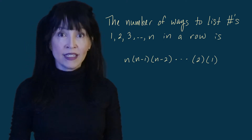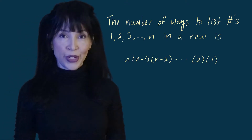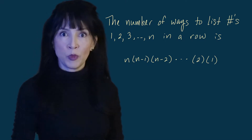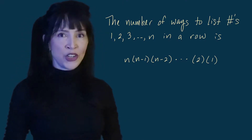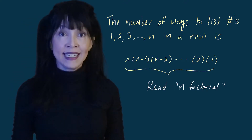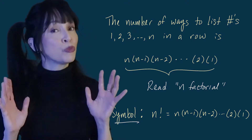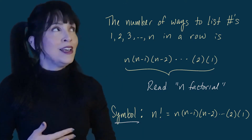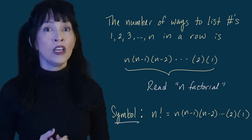If I had eight friends I don't want to draw this tree, but the principle is the same — the number of ways to line them up would be eight times seven times six times five times four times three times two times one. More generally, if I had n friends the number of ways to line them up would be n times (n−1) times (n−2) down to two times one. This product is known as a factorial, read as n factorial and denoted by n with an exclamation point after it.